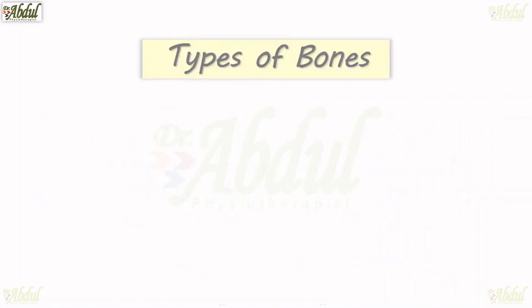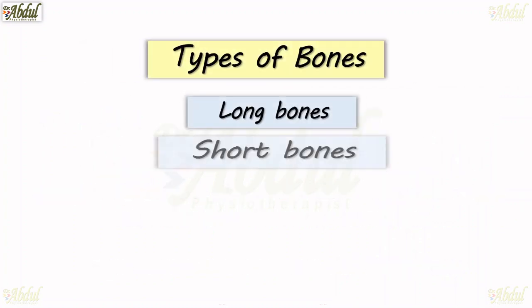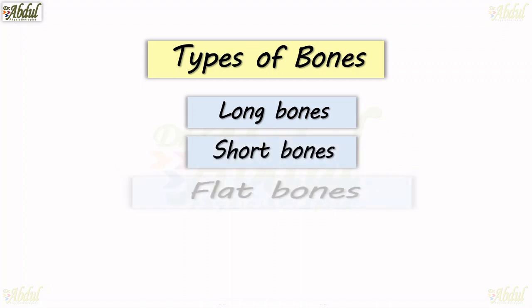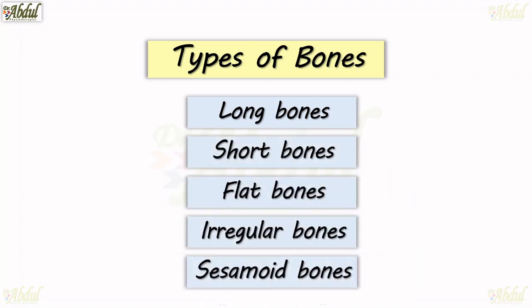Types of bones: long bones, short bones, flat bones, irregular bones, sesamoid bones. Let's see one by one.